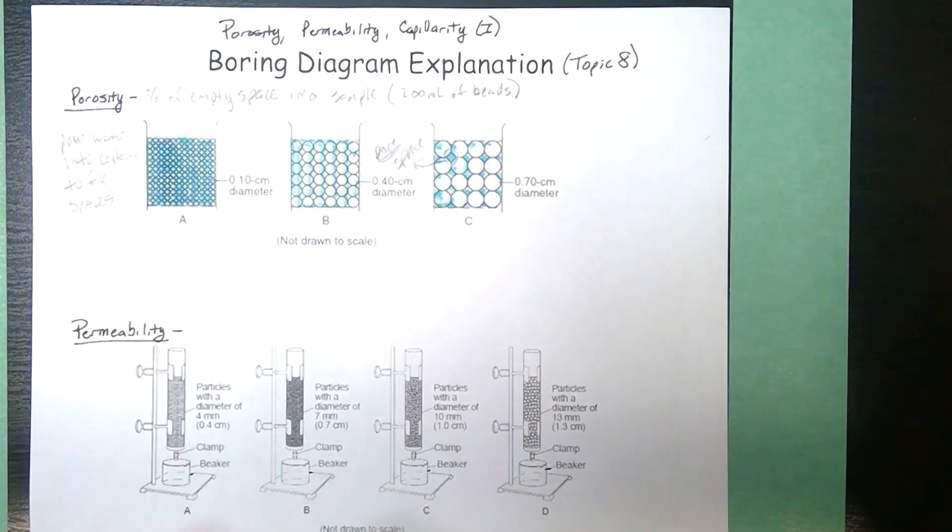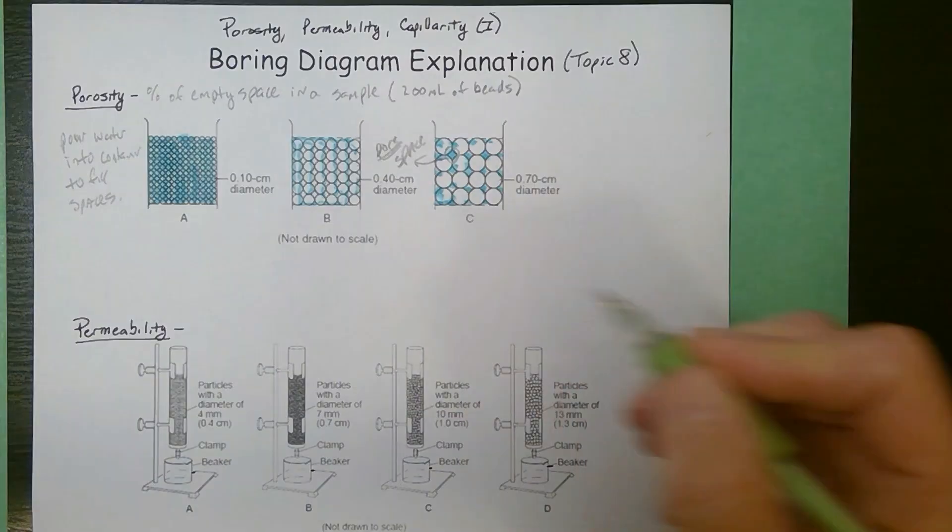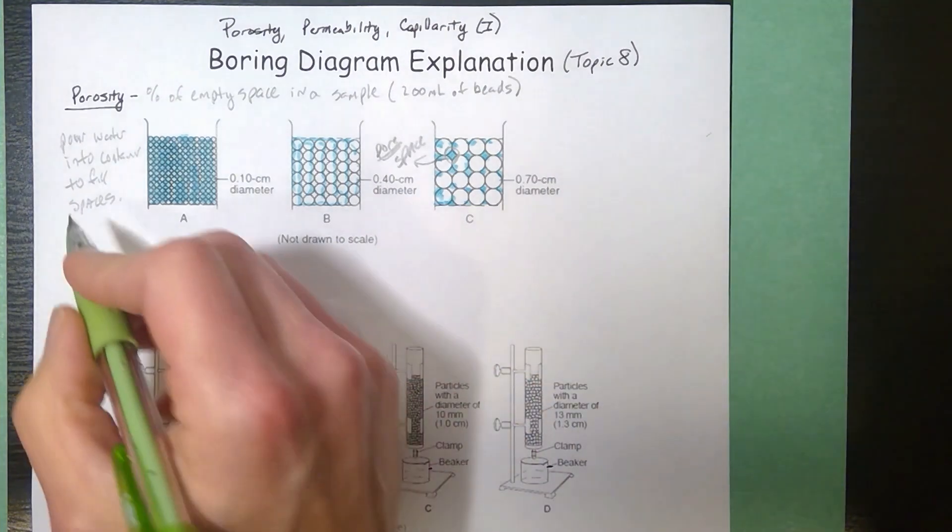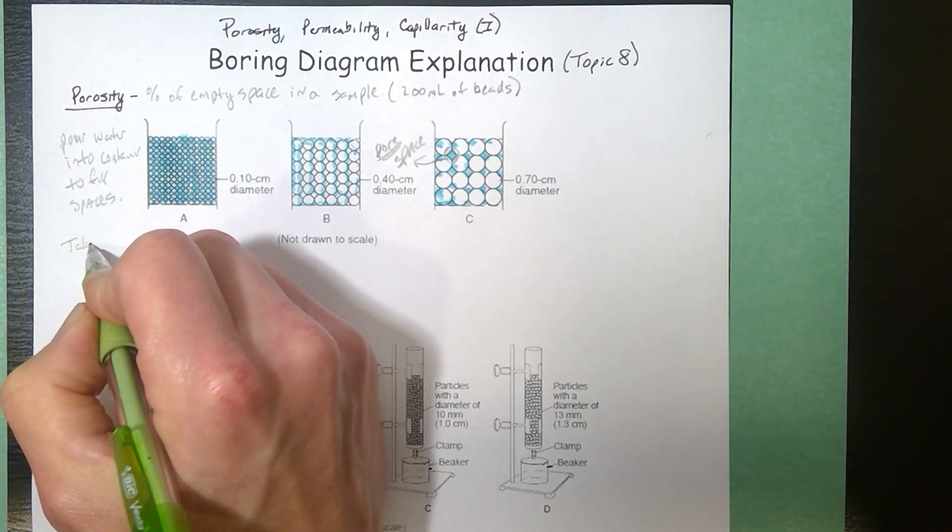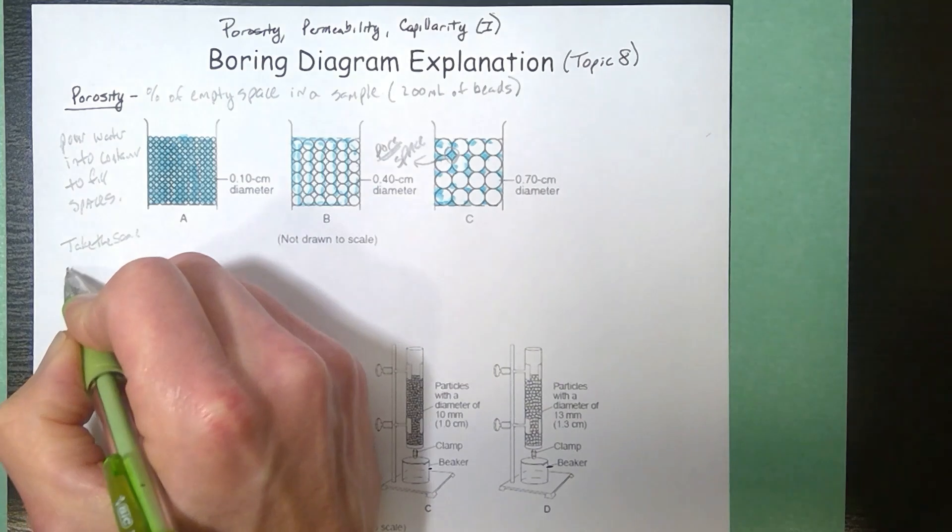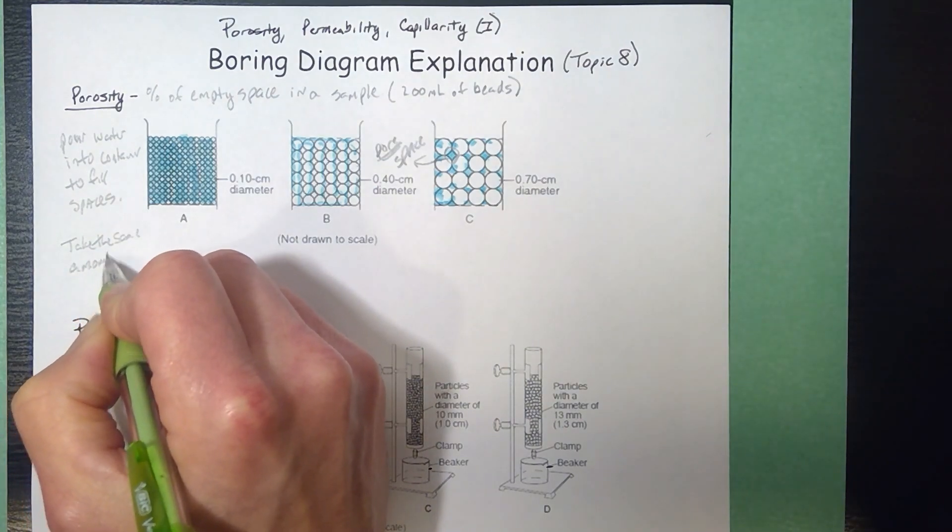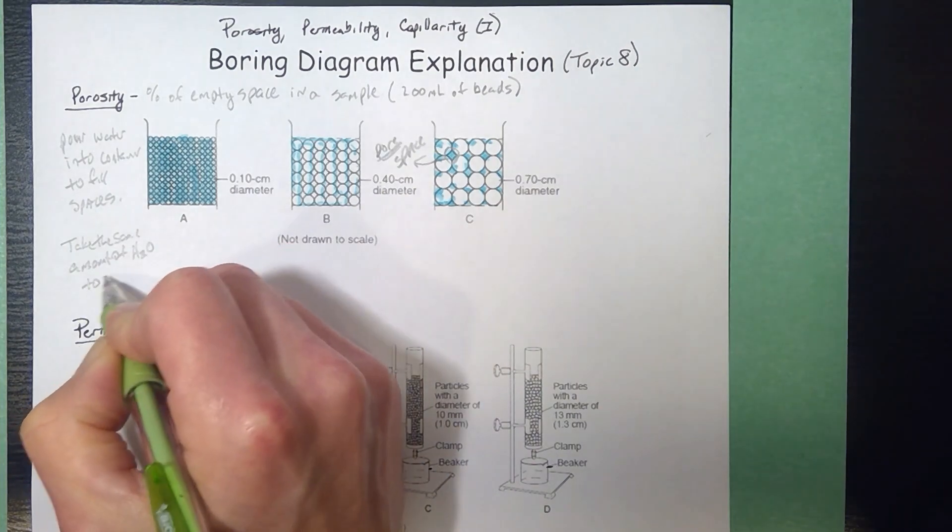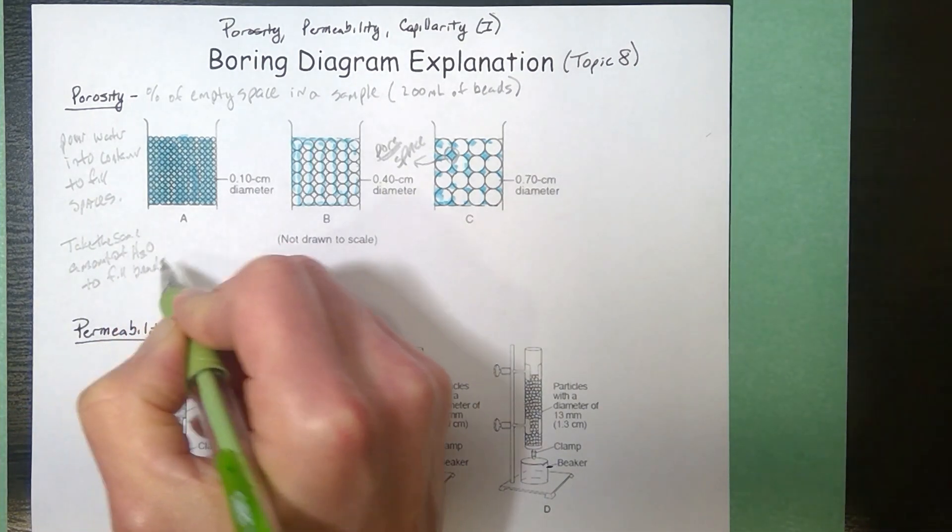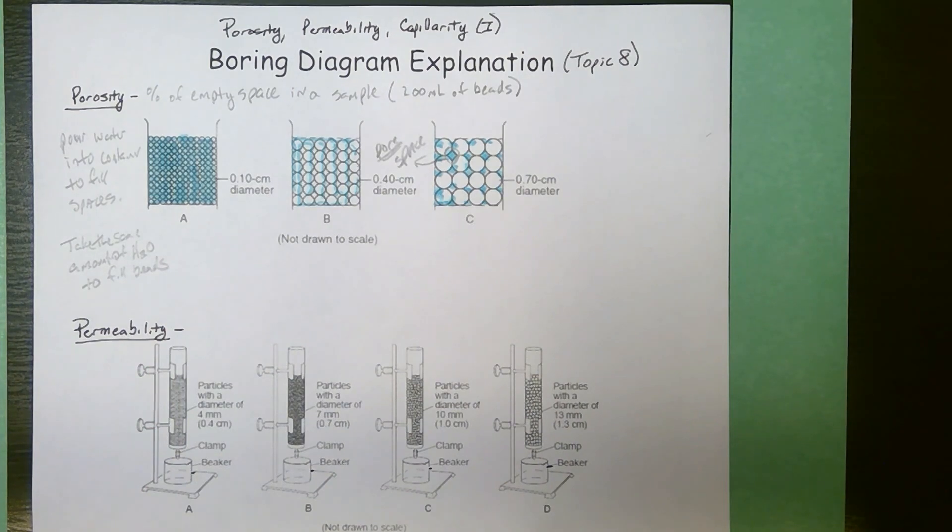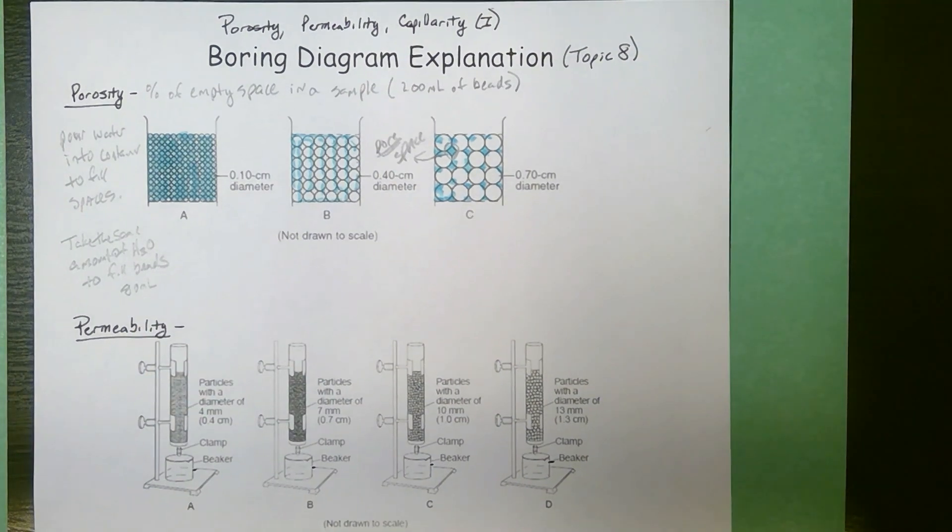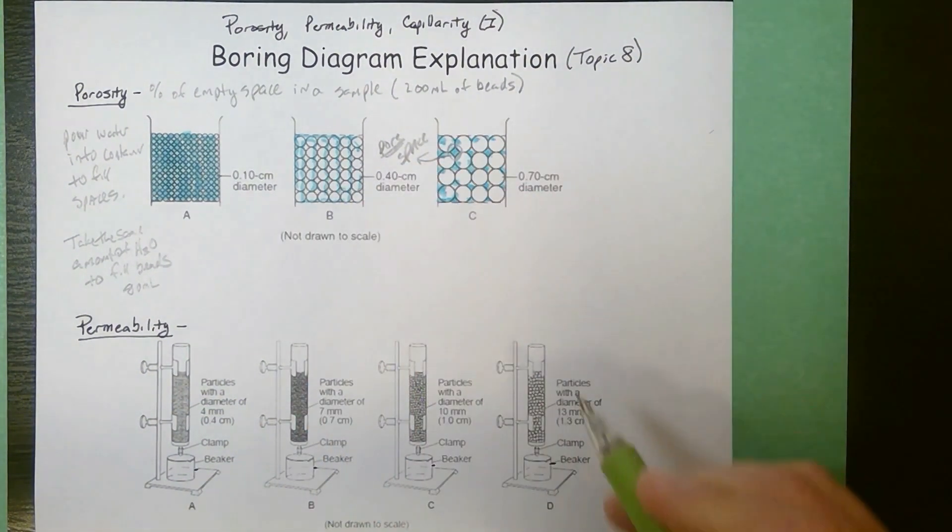Now if we actually conduct this, and we should in class, what you would see is even though there's different size pores, each one of them would take the same amount of water to fill the beads. And honestly, since these are nice round sorted samples, for each of these you would have about 80 milliliters of water would take to completely fill or saturate those beads.